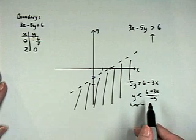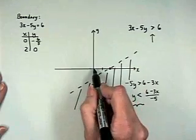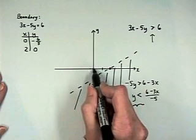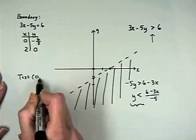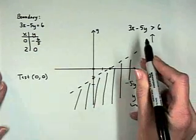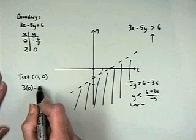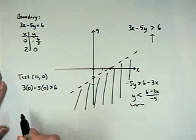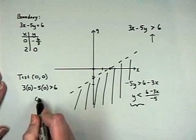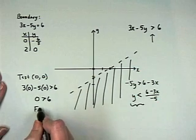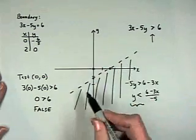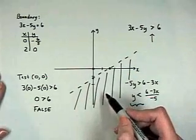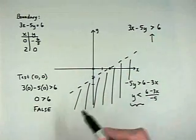The other method we could use is to choose a test point. Many times, if the equations do not go through the origin, that's the easiest test point to choose. Let's test whether 0, 0 is part of the solution set to this inequality. We substitute: 3 times 0 minus 5 times 0. Is 0 greater than 6? That is a false statement. This indicates that 0, 0, which is toward the top of this graph, is not part of the solution set, which confirms we need to shade in the bottom.